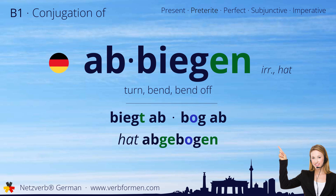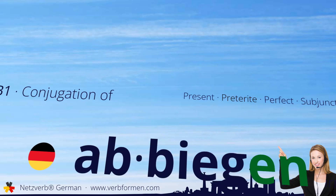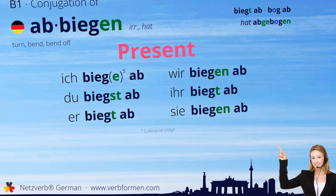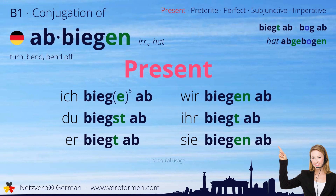Now let's move on to the tenses. First, we'll take a look at the present tense. Ich biege ab. Du biegst ab. Er biegt ab.